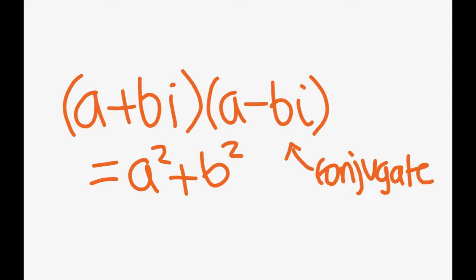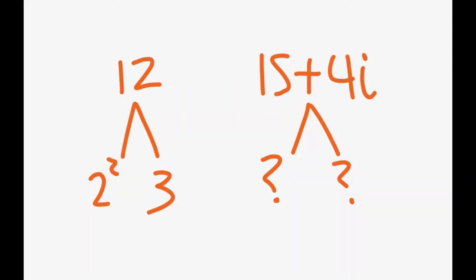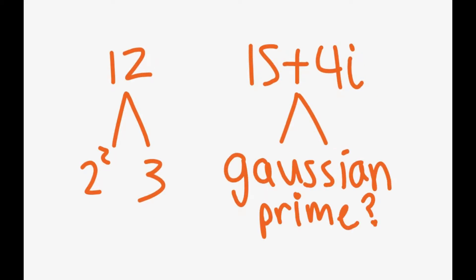Just like integers, Gaussian integers have a prime factorization. But in order to factorize Gaussian integers, we must figure out what a Gaussian prime is. Let's take a look at what we define to be primes in the integer world, as this may help us figure out what a Gaussian prime is.